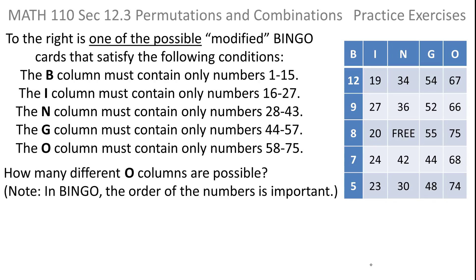To the right is one of the possible modified bingo cards that satisfy the following conditions: column B only has numbers from 1 to 15, column I only has numbers from 16 to 27, column N has only numbers from 28 to 43, column G has numbers only from 44 to 57, and column O only has numbers from 58 to 75.